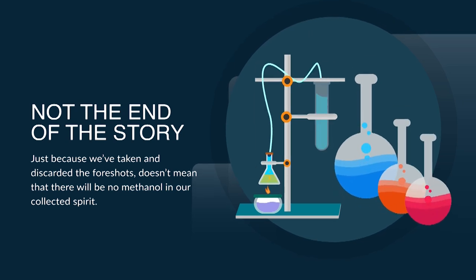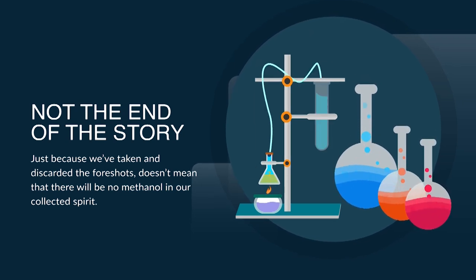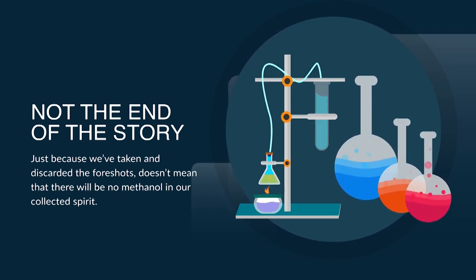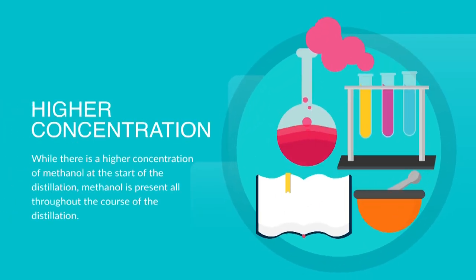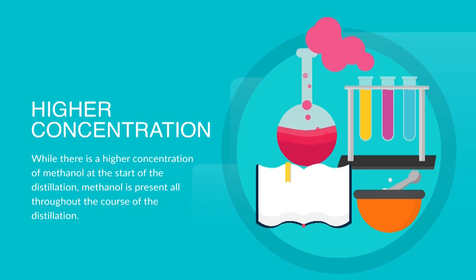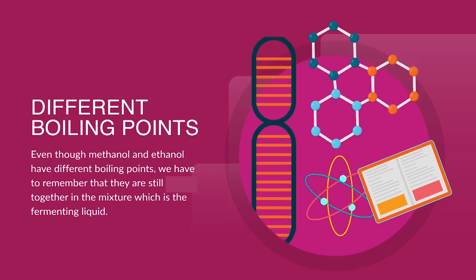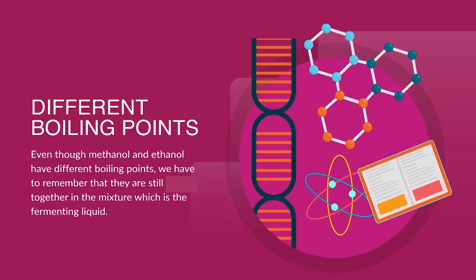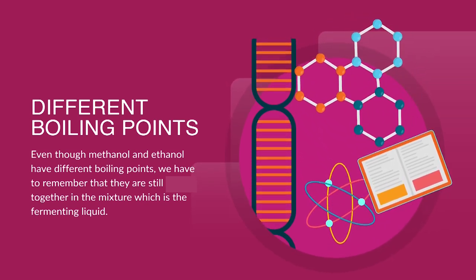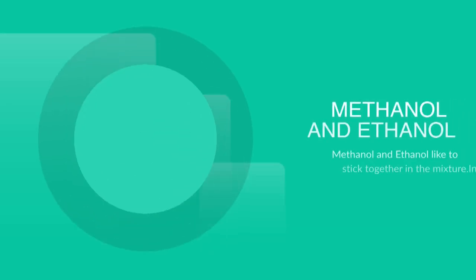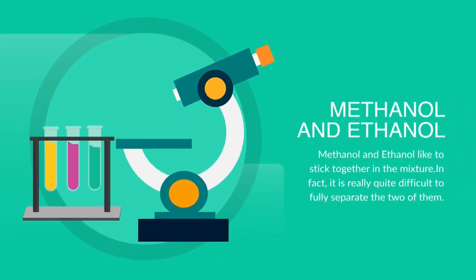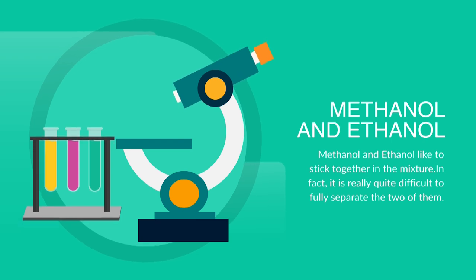That's not the end of the story though. Just because we've discarded the foreshots doesn't mean there will be no methanol in the collected spirit. While there's a higher concentration of methanol at the start, methanol is present all throughout the distillation. Even though methanol and ethanol have different boiling points, they're together in the fermented liquid mixture and like to stick together — making it really quite difficult to fully separate the two.